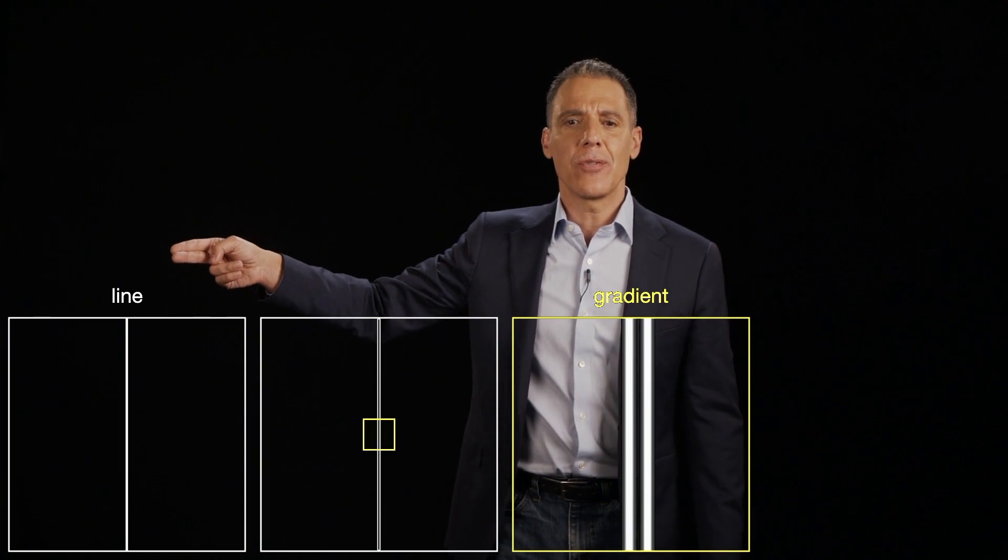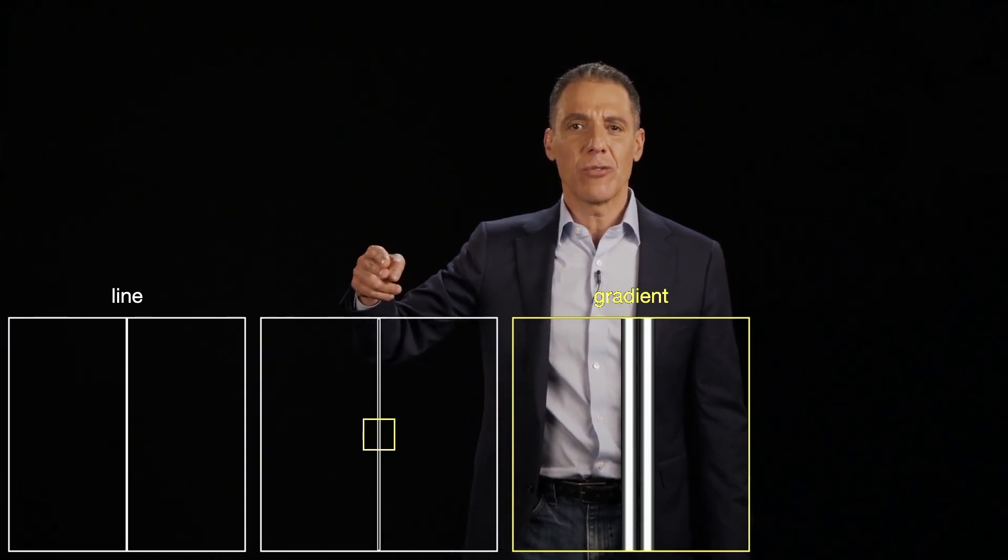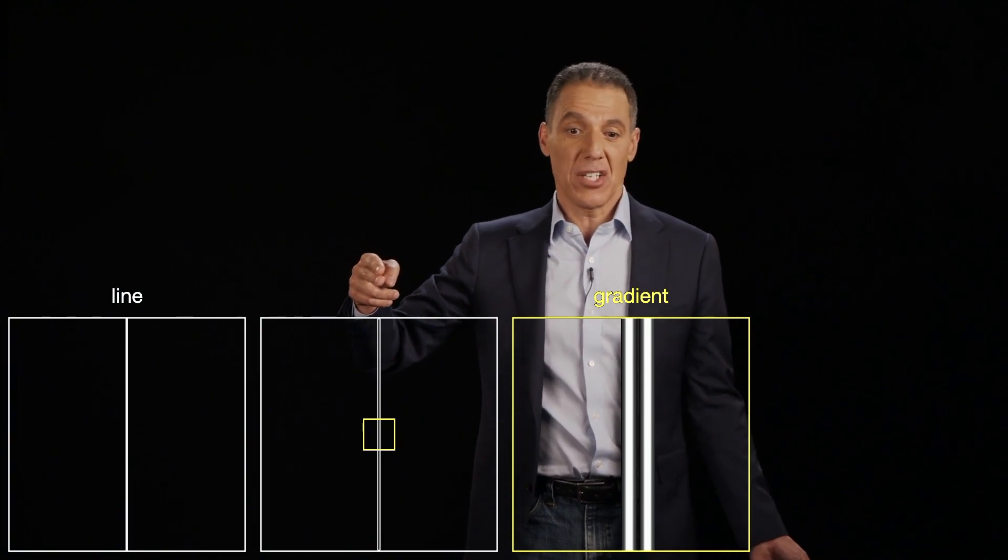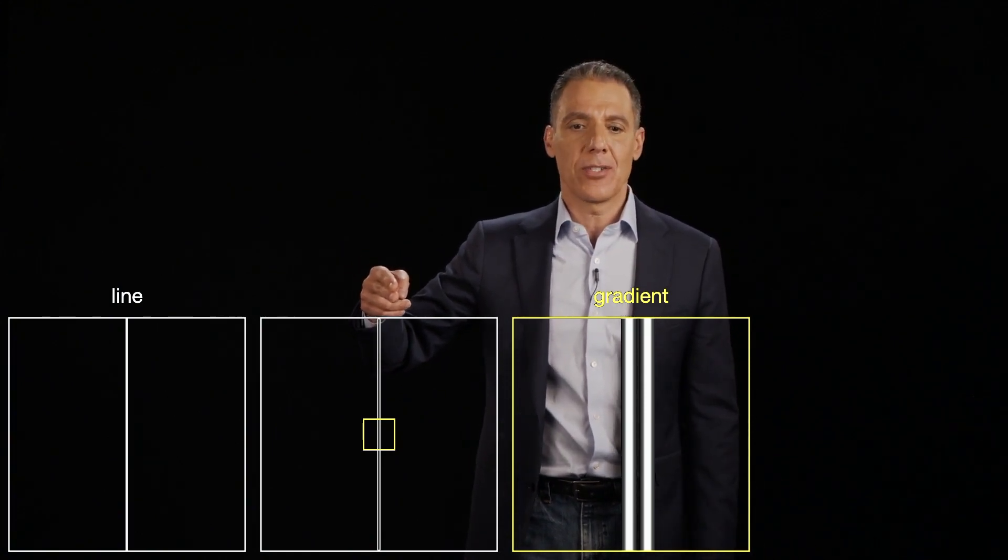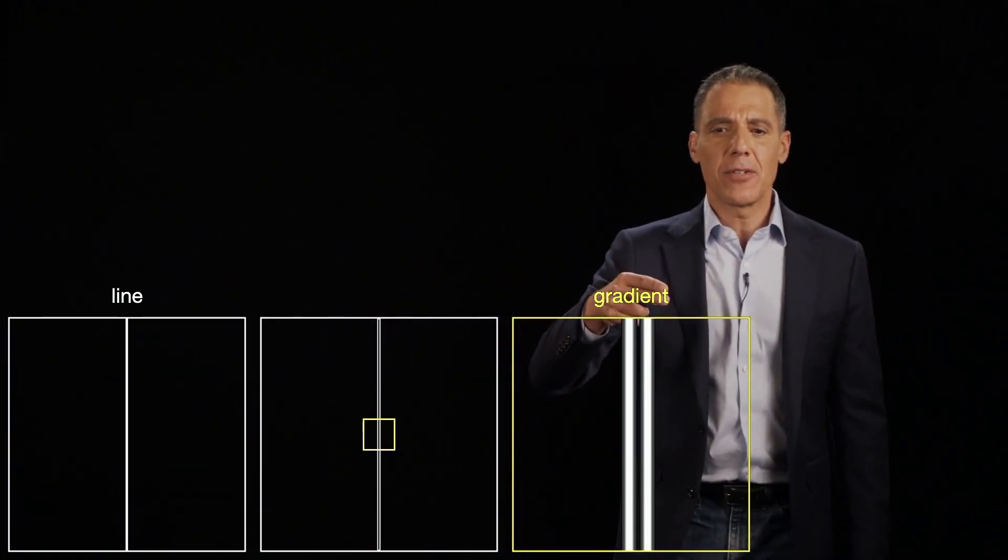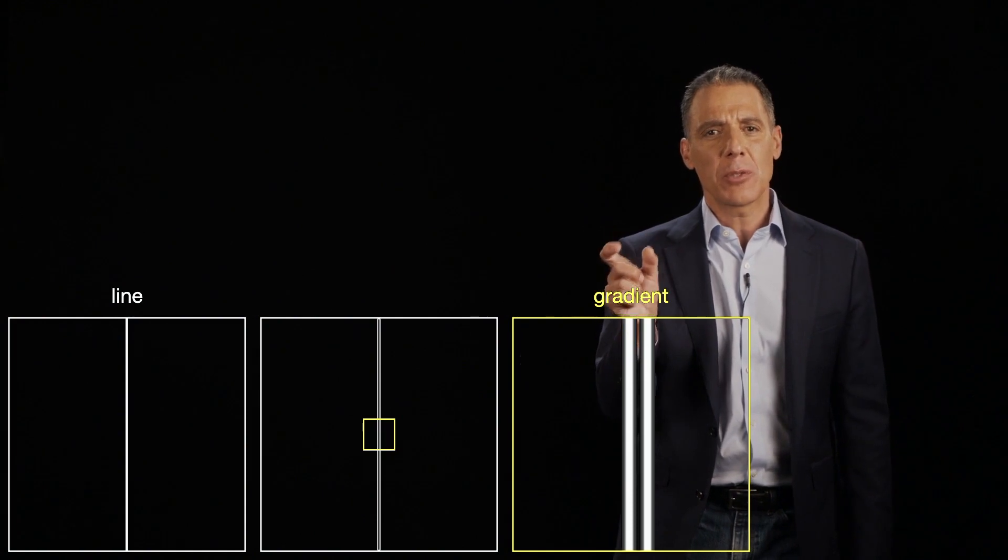But what happens when I compute the derivative there? Well, let's take a look here. So this is the derivative, which actually looks pretty good. I mean, it just looks like I highlighted where the line is, the transition. But let's look at a magnified view of it. And what are you noticing? You're noticing two responses.